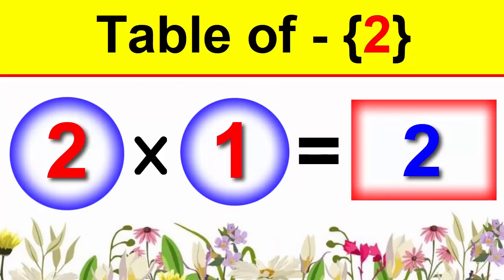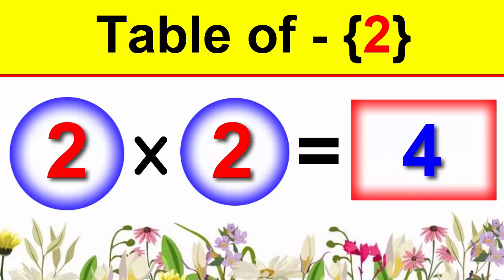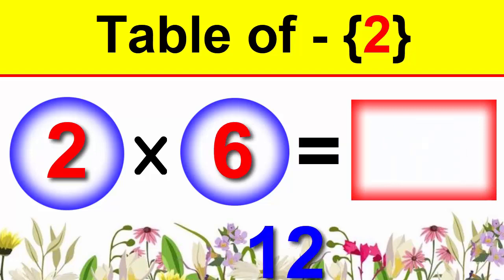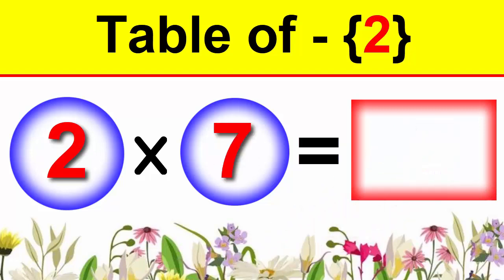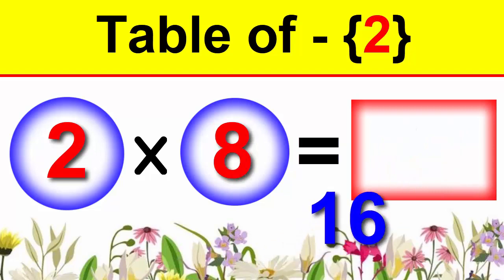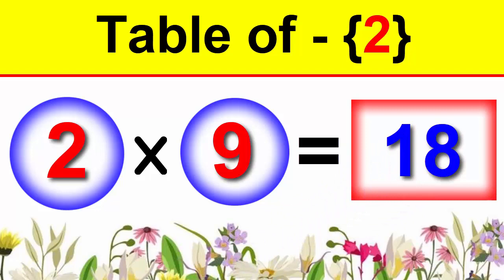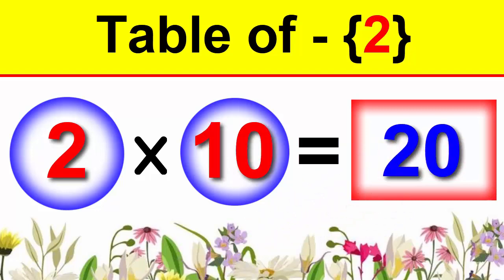2×1 is 2, 2×2 is 4, 2×3 is 6, 2×4 is 8, 2×5 is 10, 2×6 is 12, 2×7 is 14, 2×8 is 16, 2×9 is 18, 2×10 is 20.